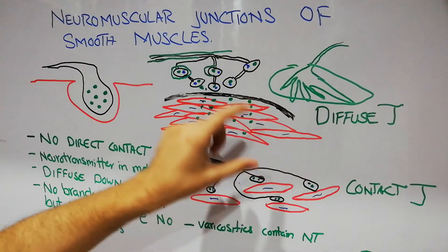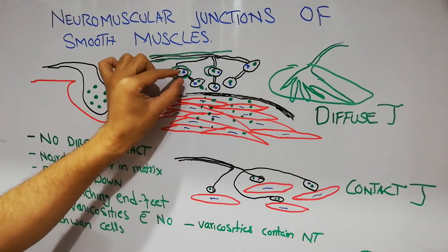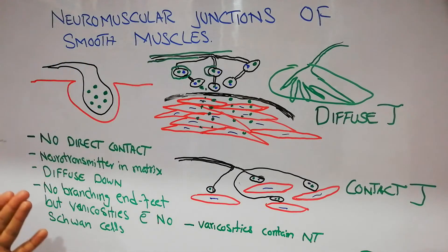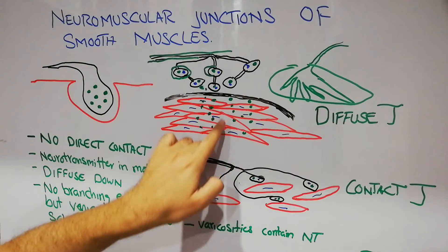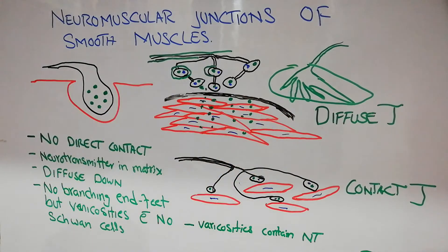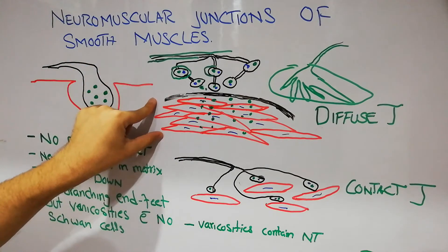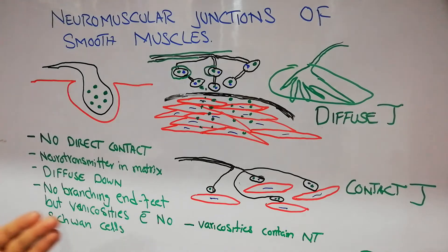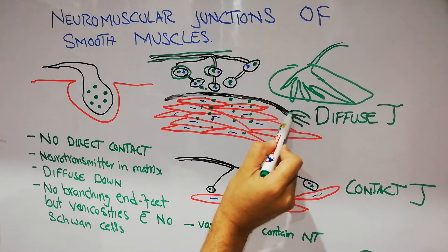To summarize the diffuse junction: the nerve fiber arrives and at its end there are varicosities. The varicosities contain vesicles with neurotransmitters — mostly acetylcholine and norepinephrine — which are secreted into the connective tissue sheet. The transmitters then travel downward and excite the lower layers of muscle fibers. This is the scenario in unitary smooth muscles. In multi-unit smooth muscles, however, this connective tissue sheet is not present.